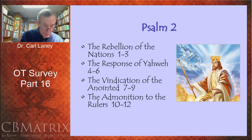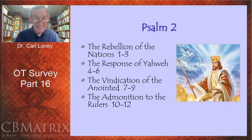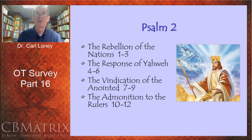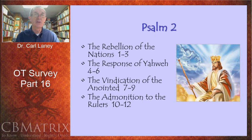The admonition to the rulers: 'Therefore, O kings, show discernment. Take warning, O judges of the earth. Worship the Lord with reverence and rejoice with trembling.' The Hebrew text reads 'and kiss the son' — do homage — 'that he may not become angry, for his wrath may soon be kindled. How blessed are all who take refuge in him.' The admonition to the rulers of the nations is to submit to the great ruler, the king himself, because his wrath will one day be kindled. He is not willing that any should perish, but that all come to repentance. His delay of judgment is a demonstration of grace — he's giving people time to repent.